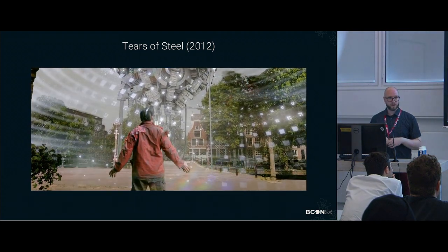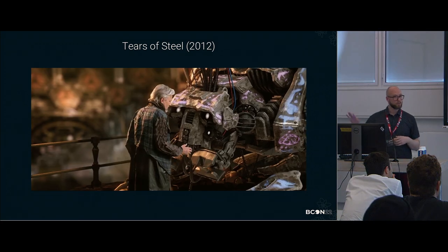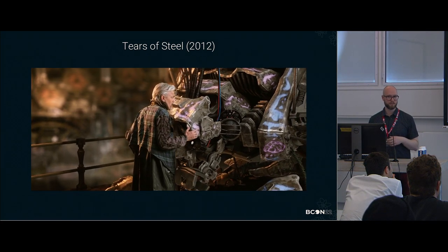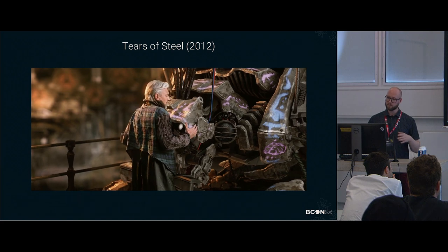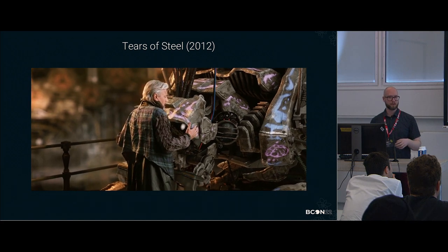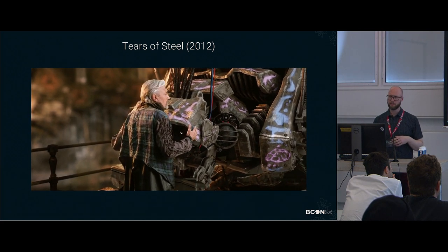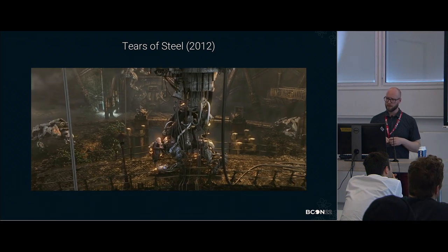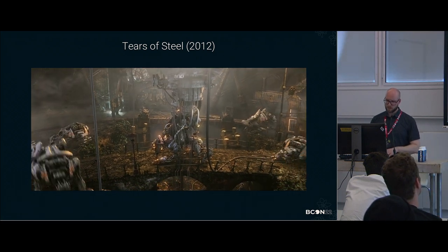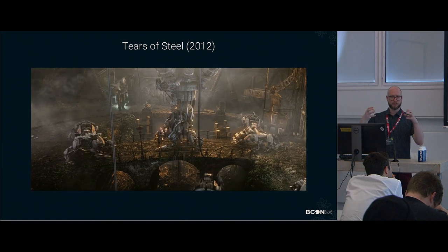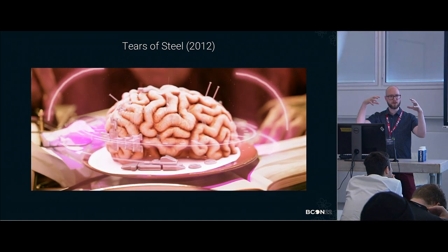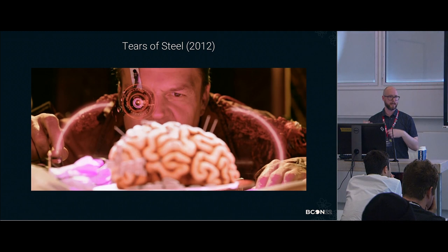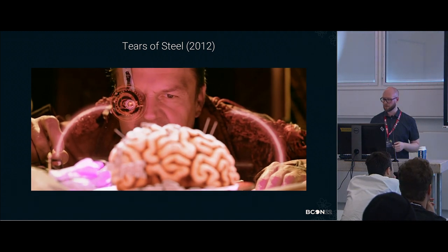The motion blur was still done in the compositor — we didn't really use Cycles motion blur; I'm not even sure if we had deformation motion blur back then. And as you can imagine, those little elements that we had to composite together were also almost little islands that we could light individually.